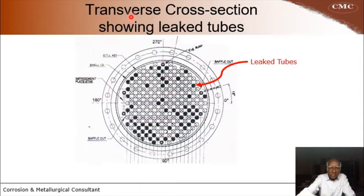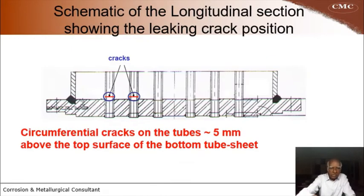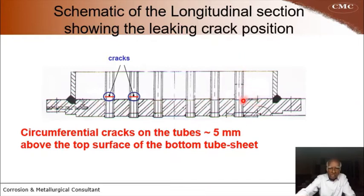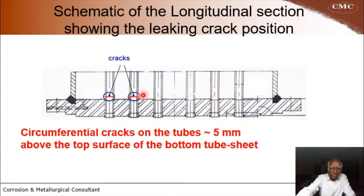This is the transverse cross section showing the leaked tubes. Approximately about 30% of the tubes leaked. This shows schematically the longitudinal section showing the leaking crack position. The cracks occurred just about 5 mm above the top surface of the bottom tube sheet. There is a similar tube sheet on the top also, and this indicates there is some problem in this area.